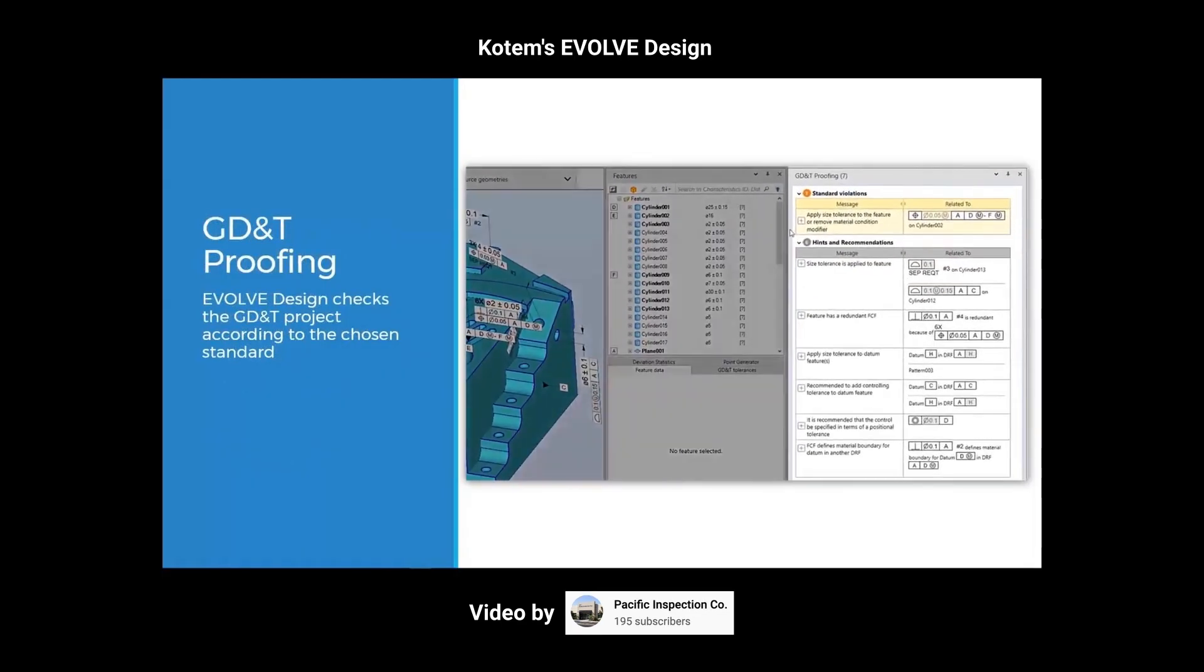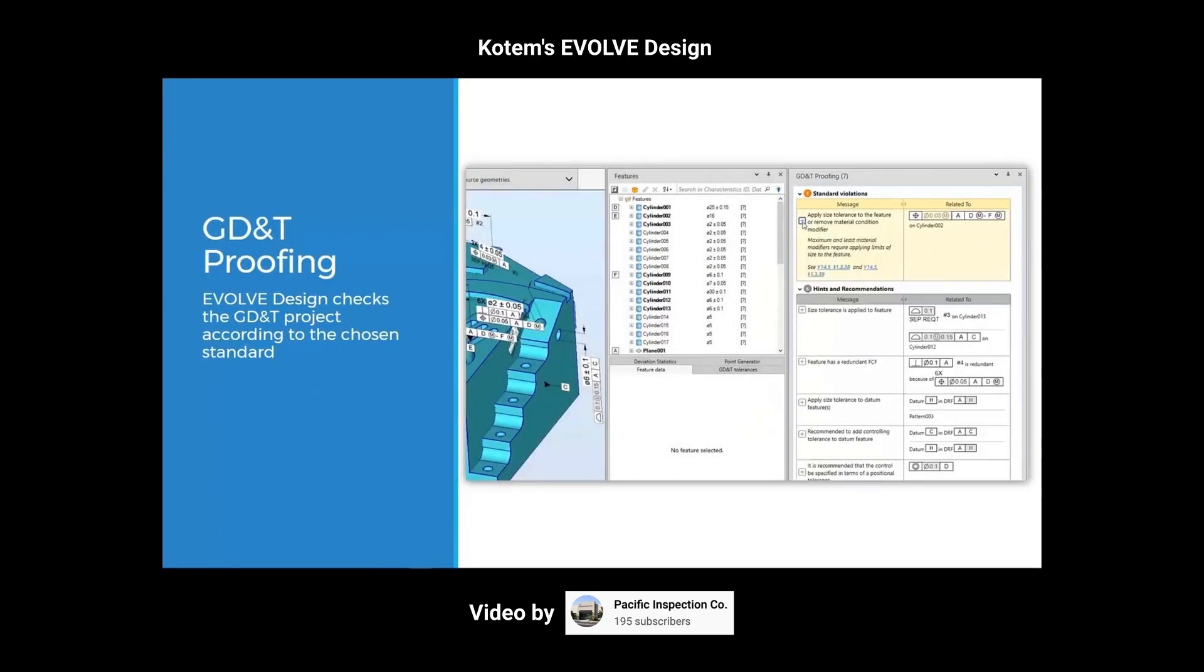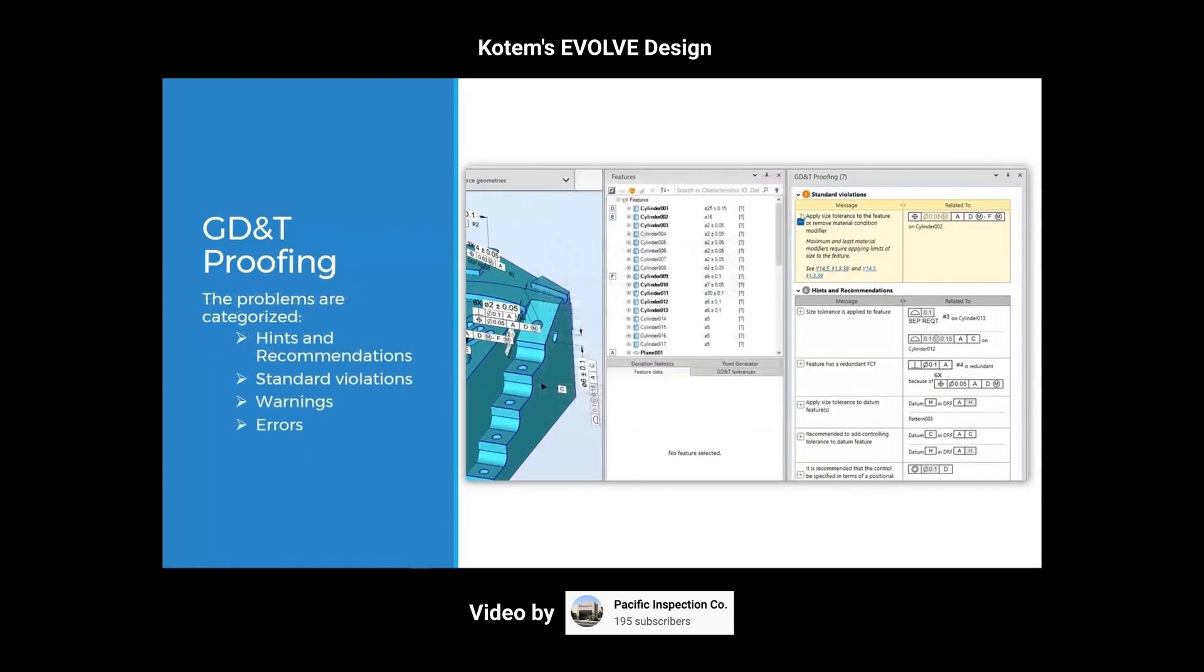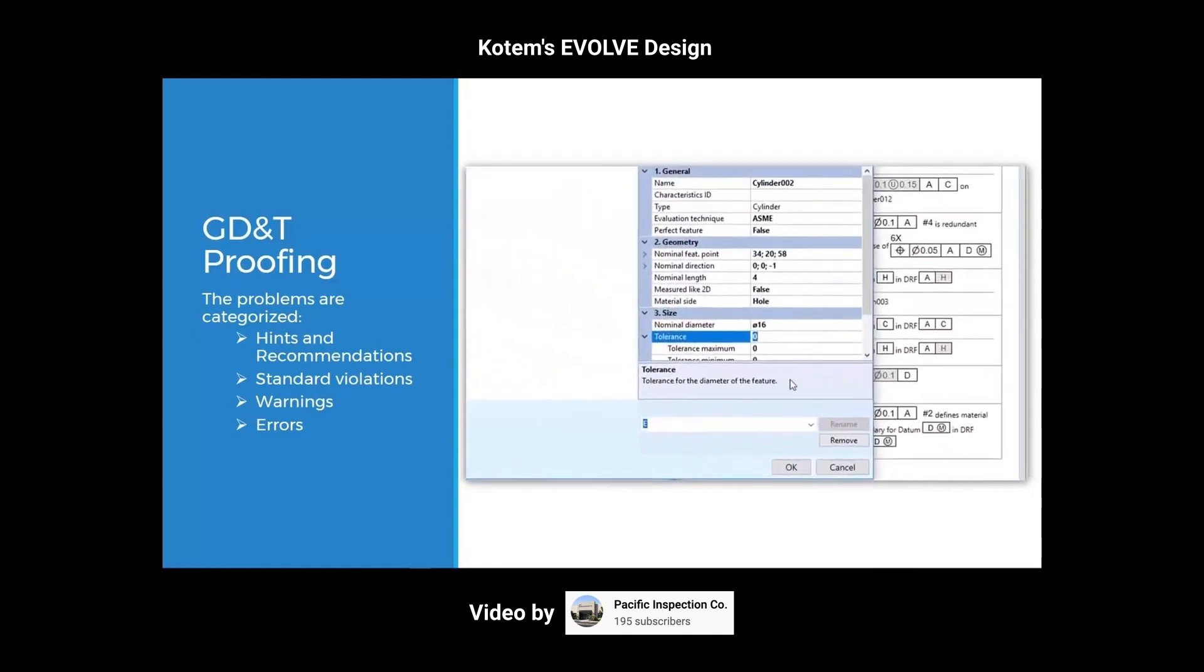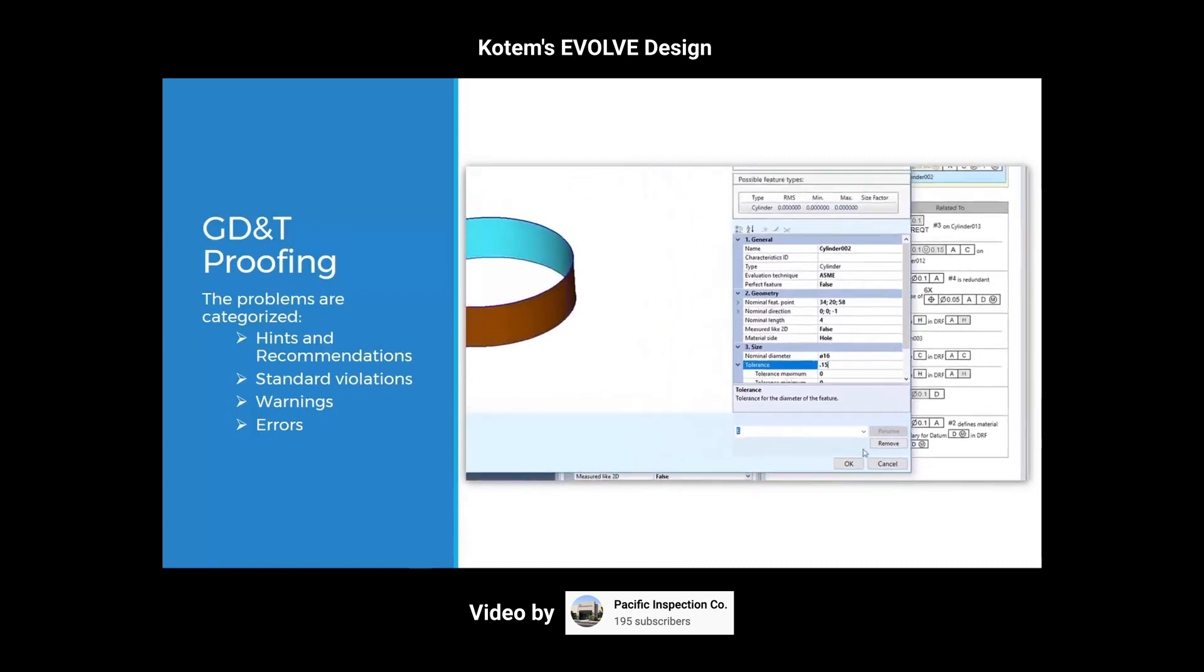And if you really must do your GD&T outside of your 3D CAD system, then you can always use a piece of software like COTEM Evolve Design that leads you through the creation of your GD&T step by step and will not allow you to add anything that contradicts another part of the drawing.